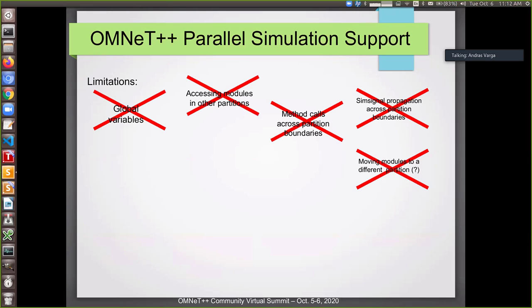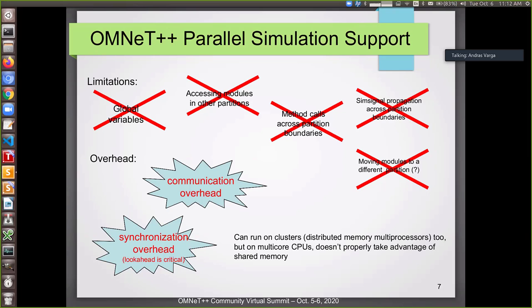So of course, because the simulations now divided up to logical processes, we have quite a lot of limitations. You can't use global variables because those variables are only local to that partition. You can't access modules in other partitions. You cannot make method calls across the partition boundaries and so on. And there is also overhead. There's communication overhead, clearly, which means that if you send a packet from one router to another and the other router is in another partition, that the message will have to be serialized and sent over to the other processor using some IPC mechanism or some kind of protocol. And there's also synchronization overhead, which means we have to keep the simulation, the simulated time somehow coordinated in order to prevent bad things from happening.